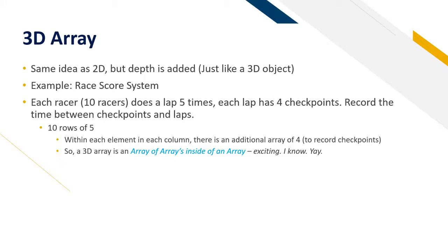A 3D array has the same idea as a 2D array but depth is added, just like a 3D object. This could be used for a race score system for this example. So each racer, 10 racers, does a lap 5 times. Each lap has 4 checkpoints. Record the time between checkpoints and laps. So in English terms there's going to be 10 rows of 5. Within each element in each column there'll be an additional array of 4 to record the checkpoints. So a 3D array is an array of arrays inside of an array.